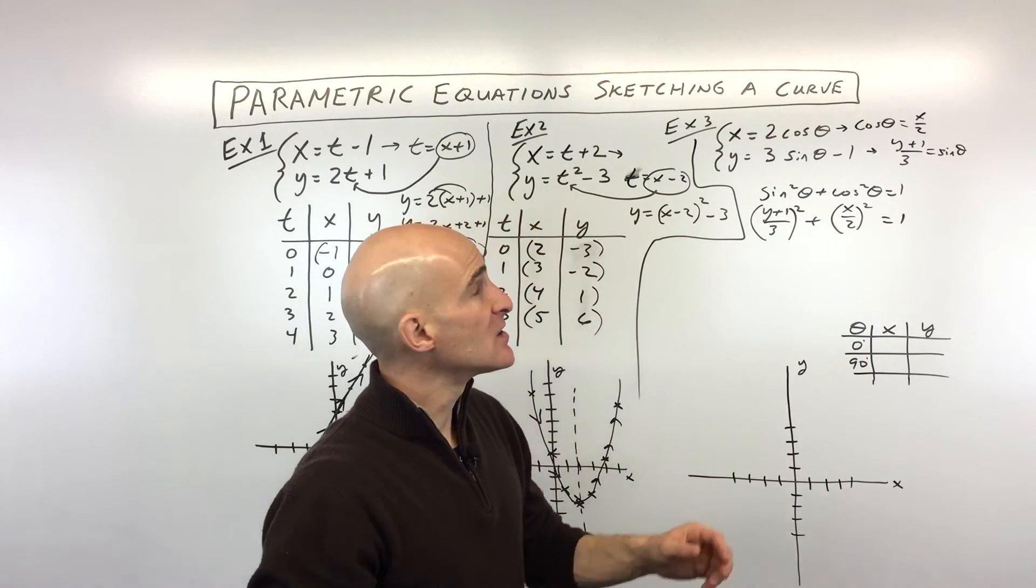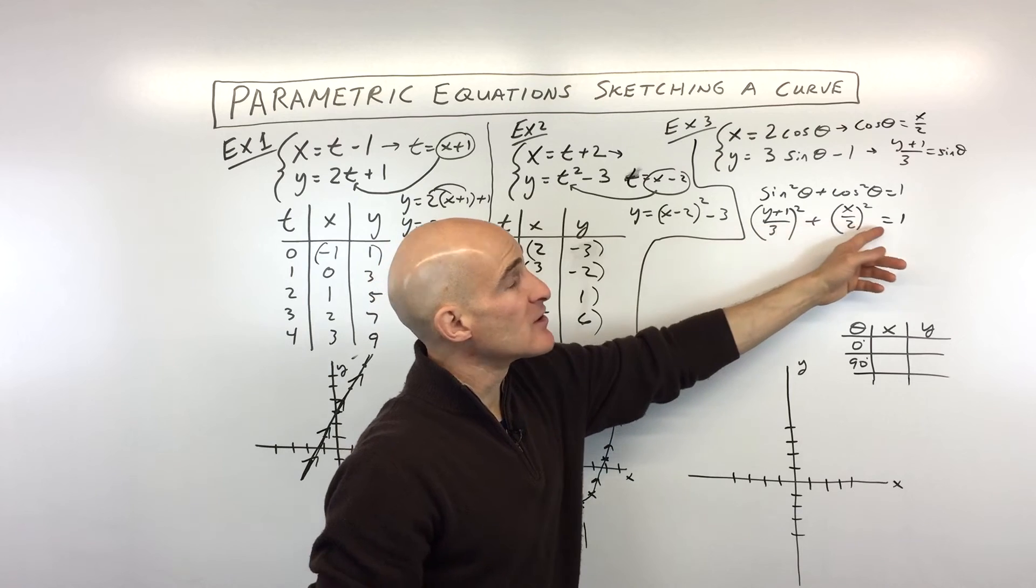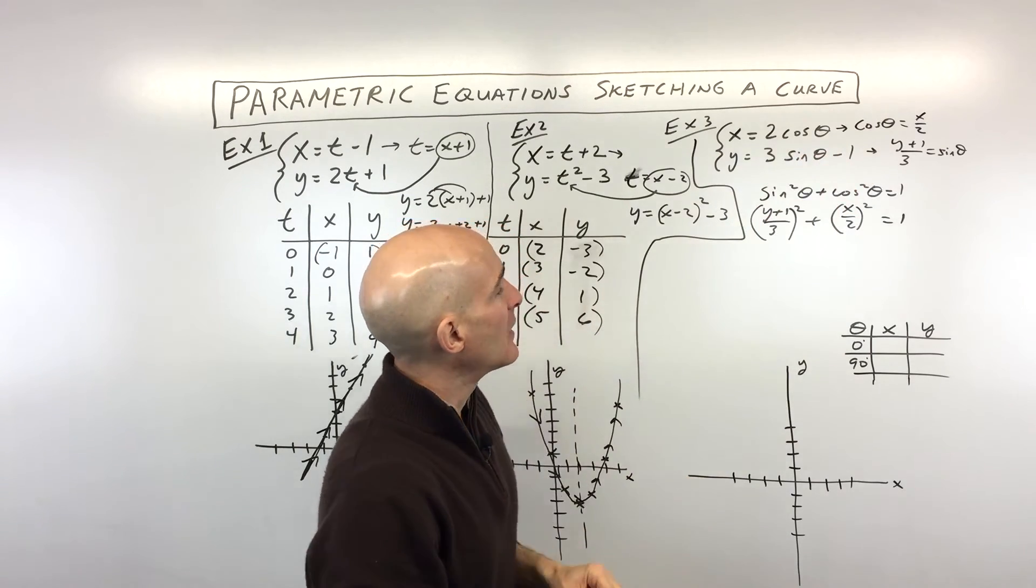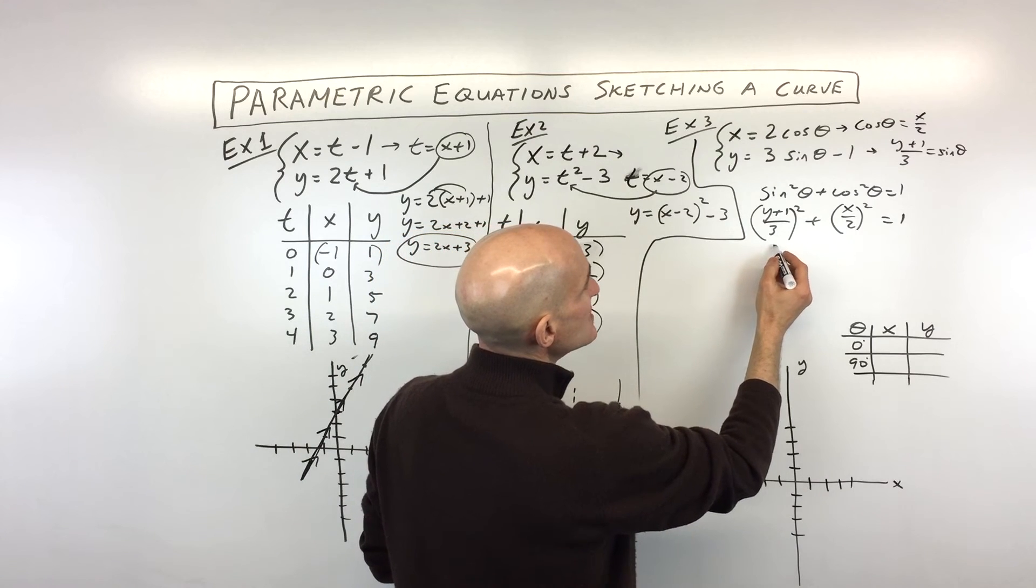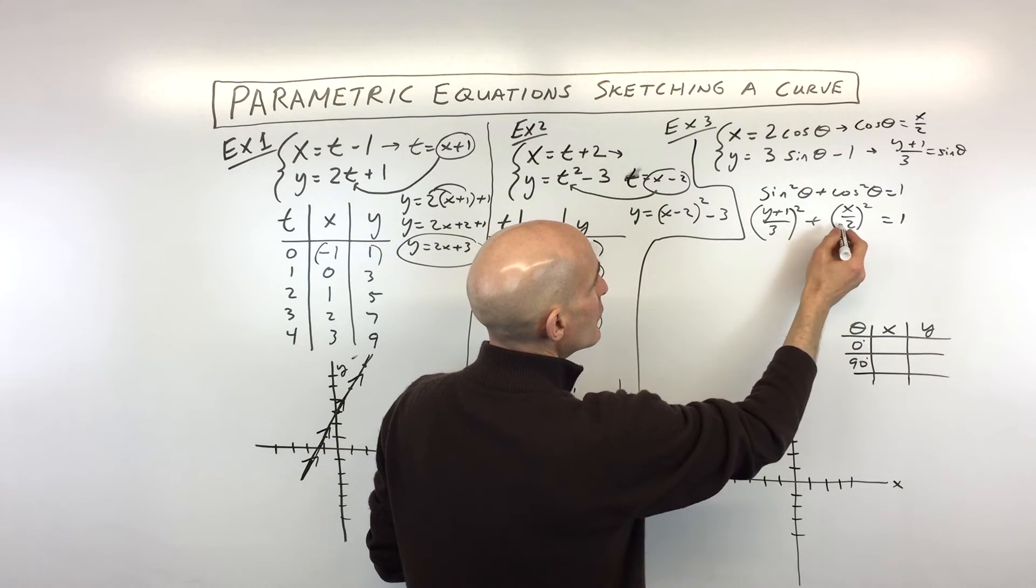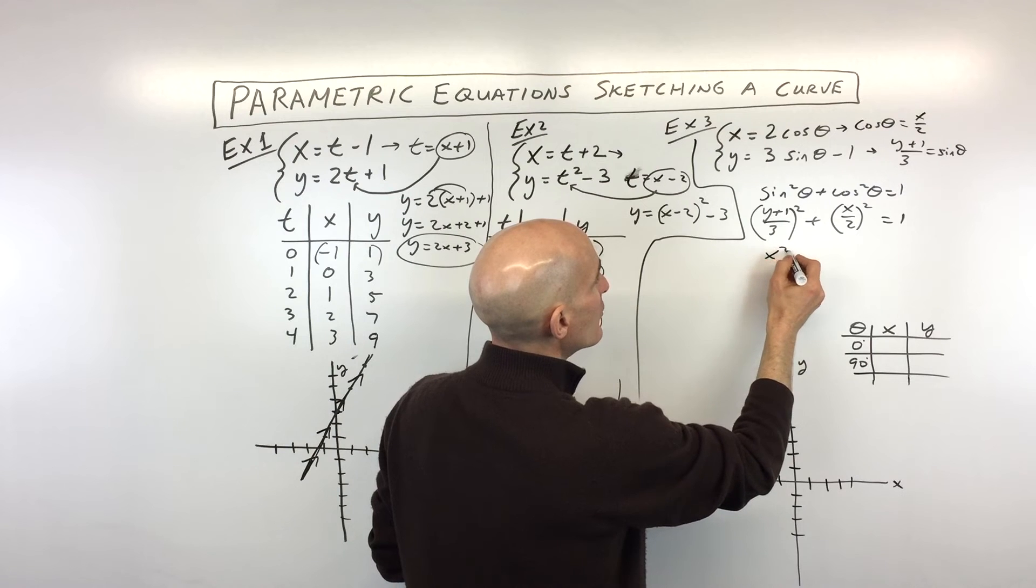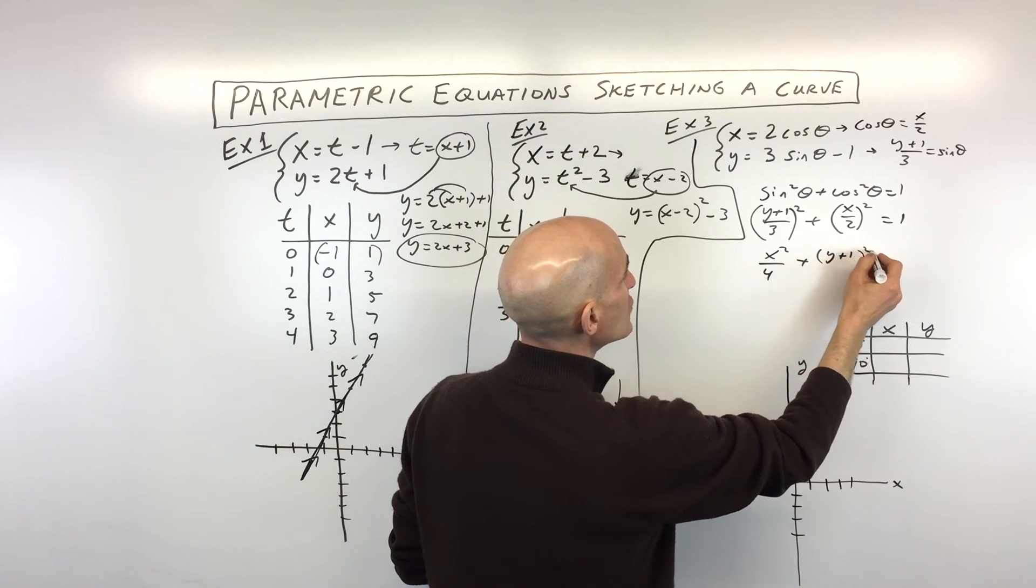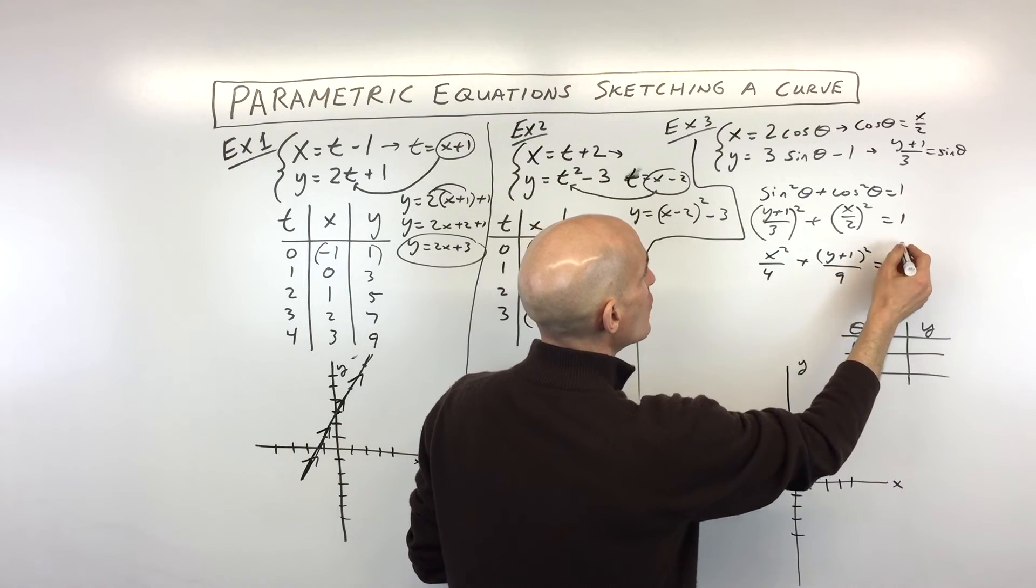So now you can see what we've done is we've eliminated the parameter. We've got everything in terms of just x's and y's. We've got rid of the theta. And if we simplify a little bit further here, what you can see is this is going to be, I'm going to rewrite this a little bit, addition's commutative. So I'm going to write this as x squared over four. This one, I'm going to write as y plus one squared over nine equals one.